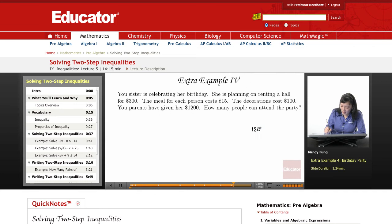So the most she can spend is $1,200. Maybe she'll spend less or maybe she'll spend exactly $1,200, but that's the most. She's already spent $300 for the hall. She's spending $100 for the decorations and she knows that each meal costs $15 per person.